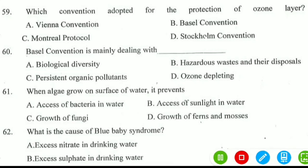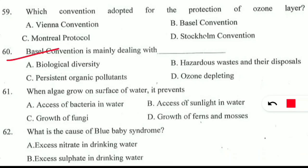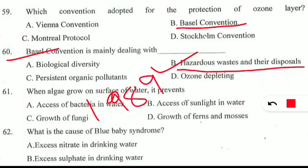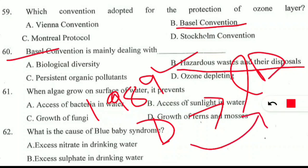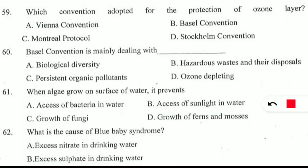The next question also came from Basel Convention: Basel Convention is mainly dealing with what? It is a straightforward question — it deals with hazardous waste and its disposal. Basel Convention was signed in 1989. The main objective of this convention was to prevent the movement of hazardous waste specifically from developed countries to less developed countries. Developed countries were disposing of hazardous waste into less developed countries, and Basel Convention came into action to regulate and stop that.